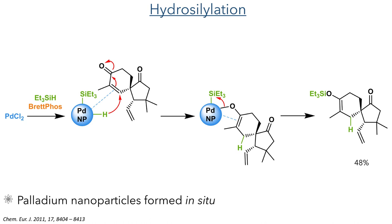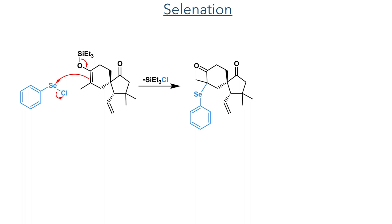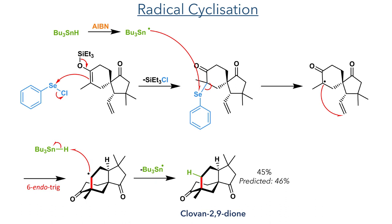The silyl enol ether then took part in a selenation reaction. It was reacted with phenylselenium chloride, generating a phenylselenyl ether at the alpha position upon the elimination of triethylsilyl chloride. This selenyl ether served as a substrate for the radical cyclisation. Tributyltin hydride was first activated with AIBN to generate a tin radical that attacks the selenium, which then eliminates, leaving a radical residing on the position alpha to the carbonyl. This then underwent a 6-endotrig cyclisation with the alkene and the resulting radical was then quenched by reaction with another equivalent of tributyltin hydride.